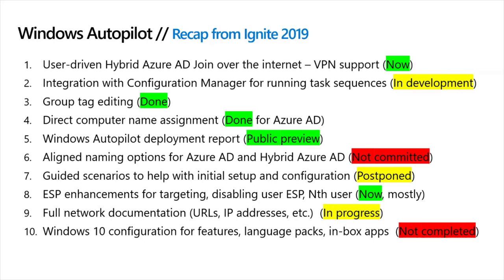We are working on better integration with Configuration Manager. One of the challenges is a lot of customers don't necessarily want to lift and shift their entire Config Manager task sequence and application set into the cloud and push it out via Intune. Plus, for things like purposefully sequencing tasks, Intune doesn't provide that as an option. We've been slowly chipping away at the ability to integrate Config Manager into the autopilot process — starting with content from cloud DPs and cloud management gateways, then kicking off a task sequence automatically when the Config Manager agent is installed. We had also promised customers the ability to edit group tags — that one's done, you can do that today.